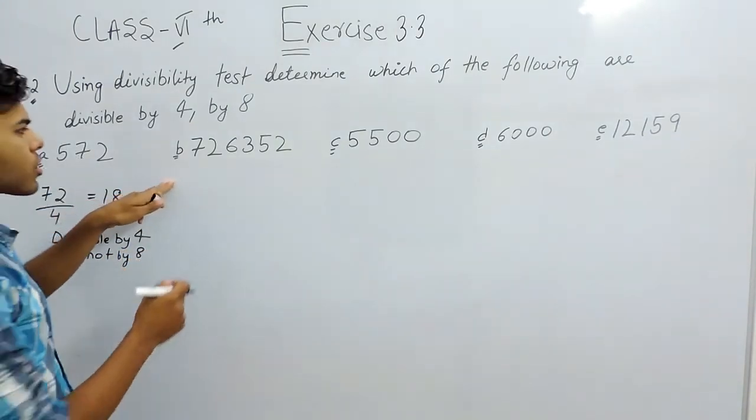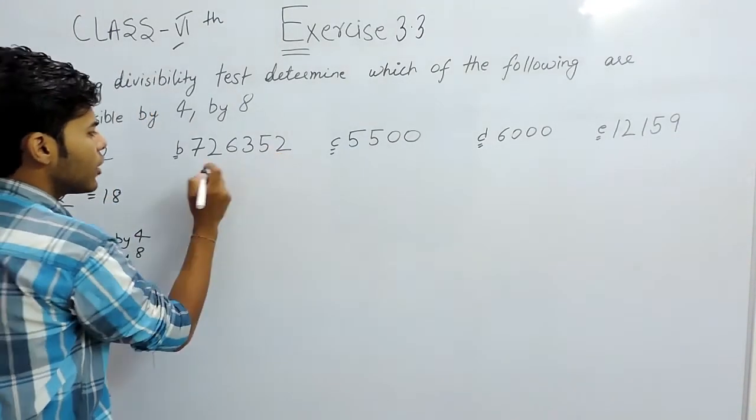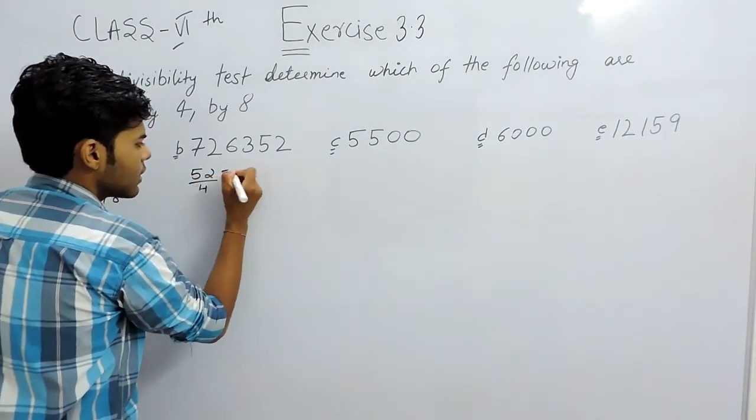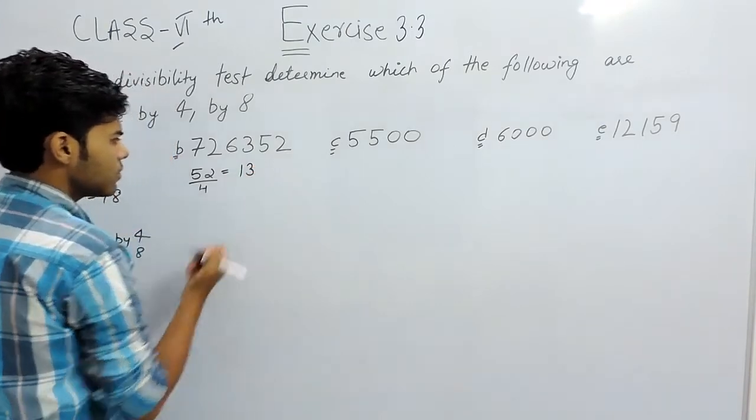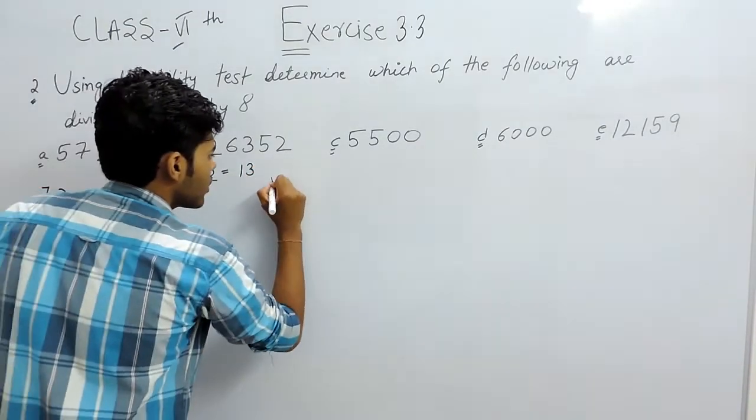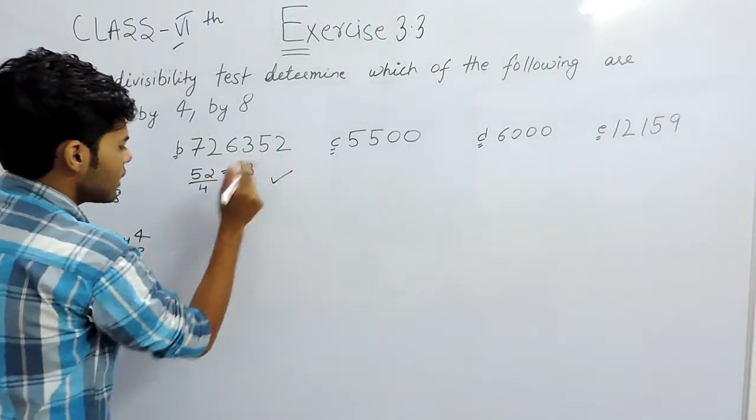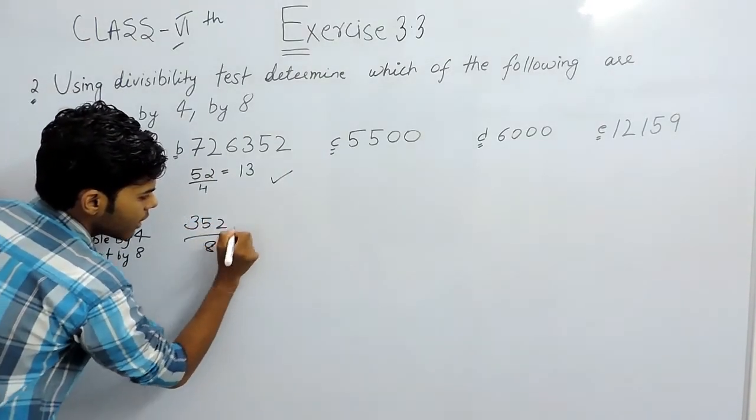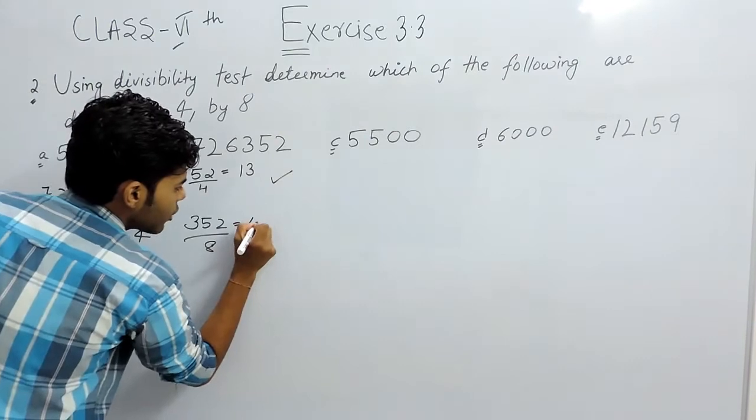Now in this question the last two digits are 52, so we will write 52 upon 4, that will be 13. It is divisible by 4. Then for 8 we will write 352 upon 8. 8 times 4 is 32, remainder is 3. 8 times 4 is 32.